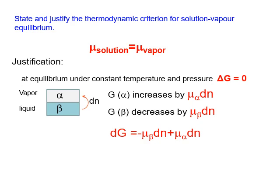In order to obey the second law, this change should be zero. For delta G to equal zero, since dn is the same, the chemical potential must be the same. So to obey the second law, delta G equals zero requires the chemical potential to be equal, so there is no Gibbs energy change even if there is a number of moles change from alpha to beta or beta to alpha.